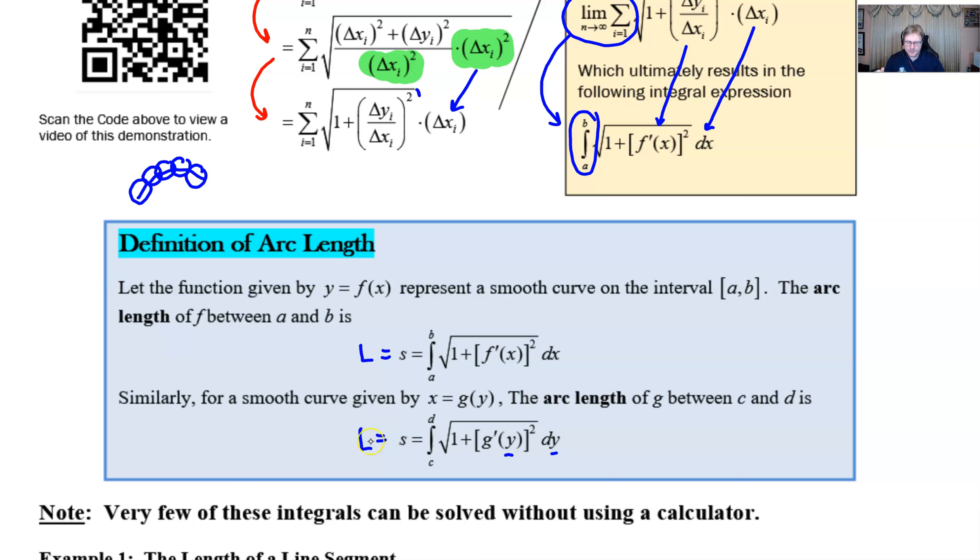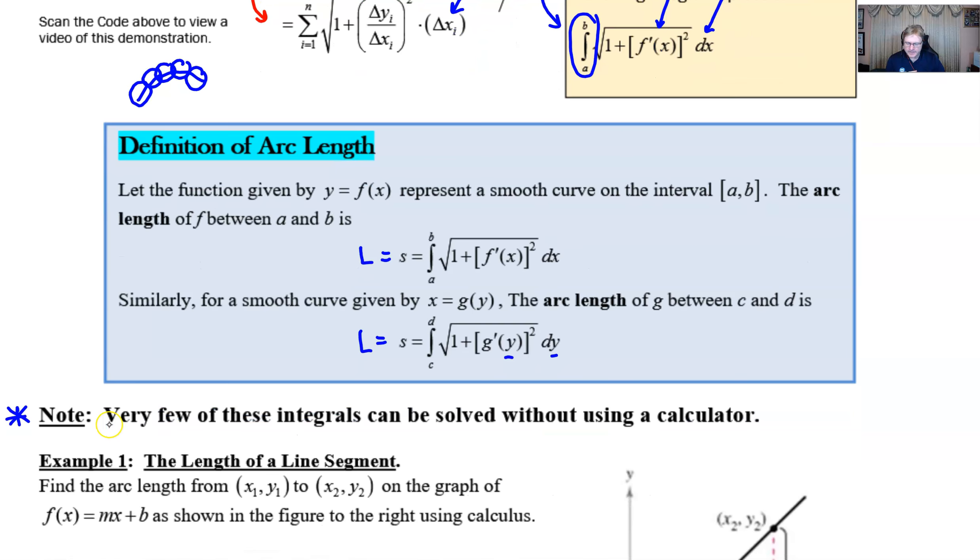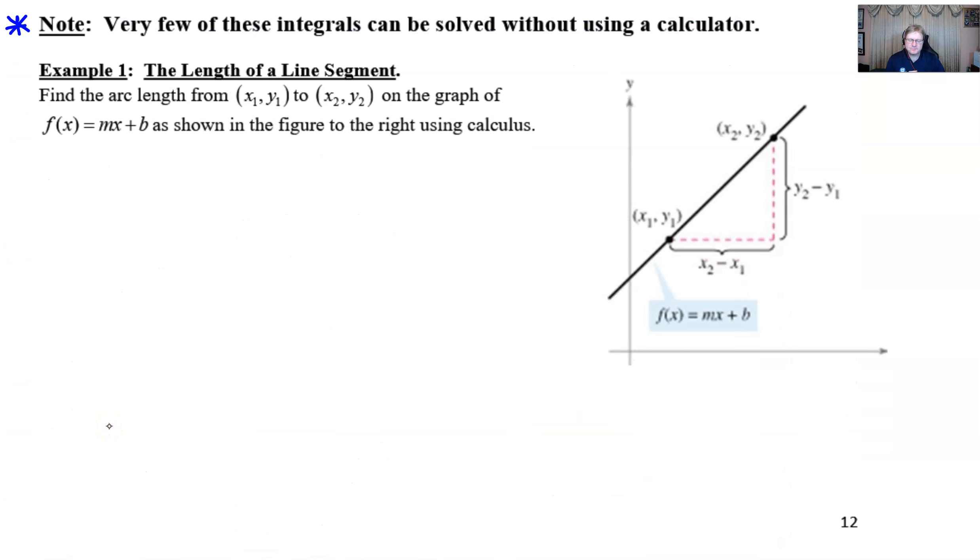I want to run through a real quick generic example in this video, then we'll close out. You can watch subsequent videos about more specific types of functions. I do want to make a special note: a lot of these integrals are very nasty and can't be solved without a calculator. That will be emphasized in videos two and three. But for video one, I'm going to do something you might think is peculiar. Find the arc length from (x1, y1) to (x2, y2) on the graph of f(x) = mx + b. I know you're probably thinking that's not an arc, but just stay with me.